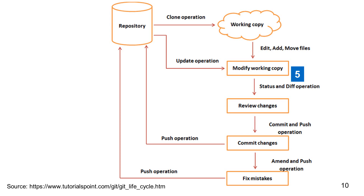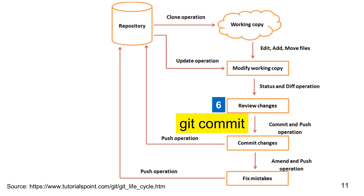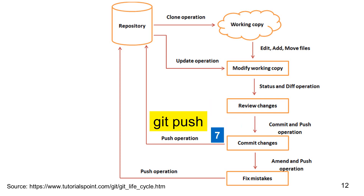You can keep working on your local copy of the files. When you feel that your work is ready to take a snapshot, use the git commit command. The git commit command changes only your local files. You have not made any changes to the repository yet. When you are ready to change the repository, use the git push command.